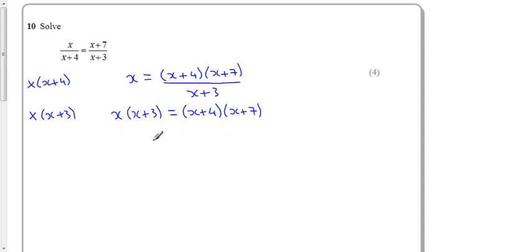Now I'm going to expand it all to make it a little bit easier. So I get x squared plus 3x, and expanding my double bracket I get x squared plus 4x plus 7x plus 28.